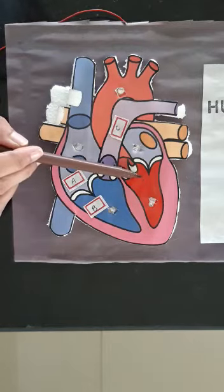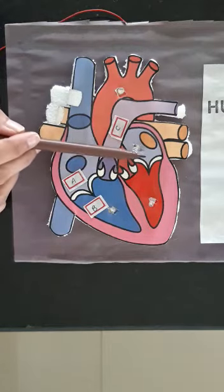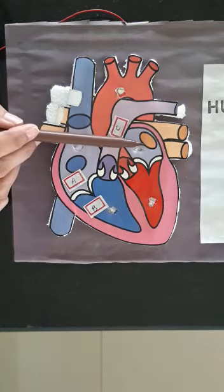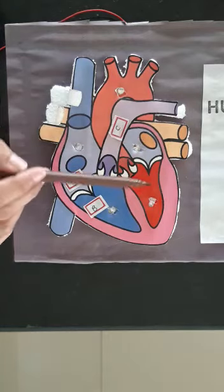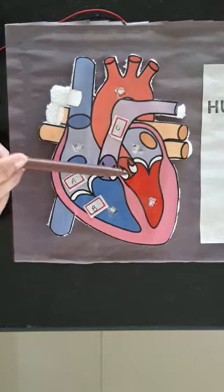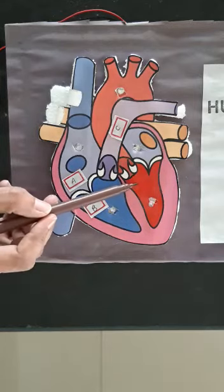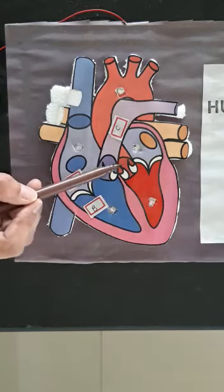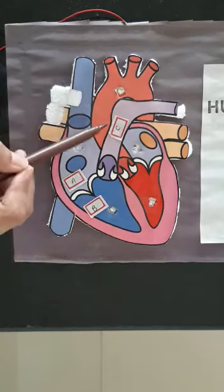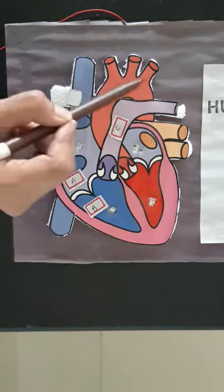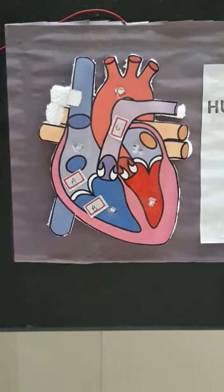The left ventricle collects the oxygenated blood coming from the left atrium. From here it has to reach different parts of the body — that blood which is full of oxygen has to reach different parts of the body. It reaches all those different parts through this large vessel which is called the aorta. The aorta is the largest artery in the body.